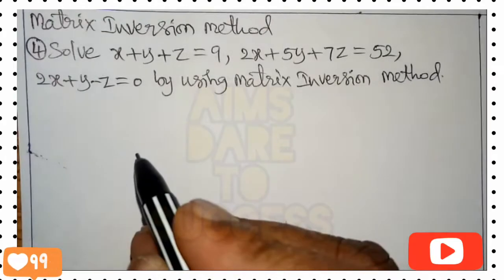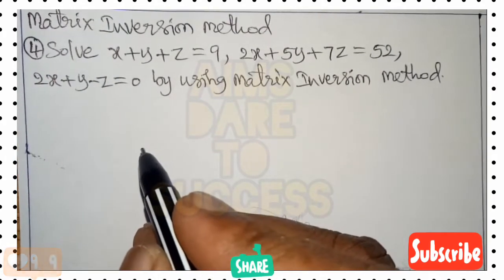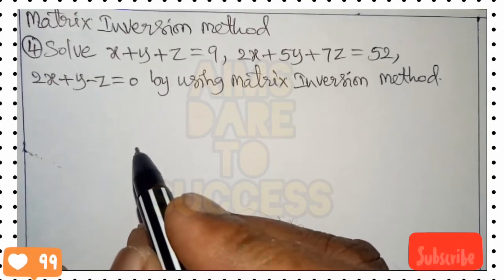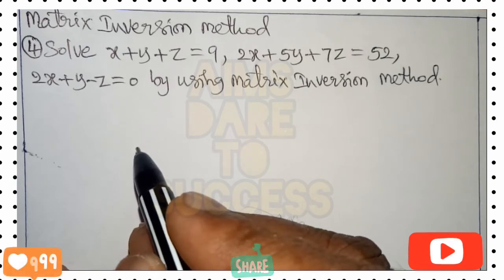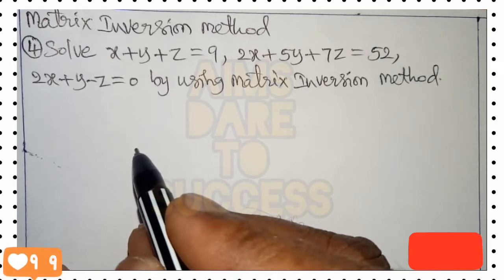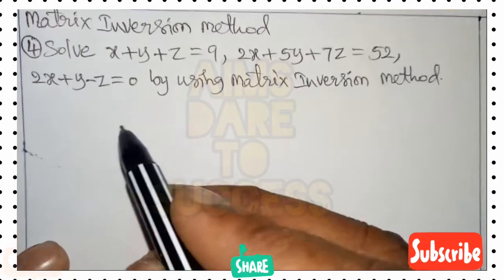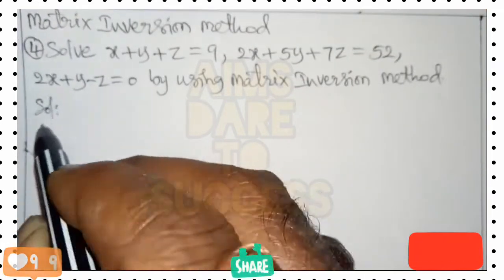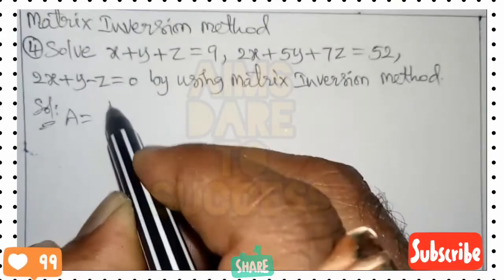Hi, hello, namaste! Welcome to YouTube channel Aims There to Success. Today we are discussing the matrix inversion method. We are solving: x plus y plus z equals 9, 2x plus 5y plus 7z equals 52, and 2x plus y minus z equals 0, using the matrix inversion method.